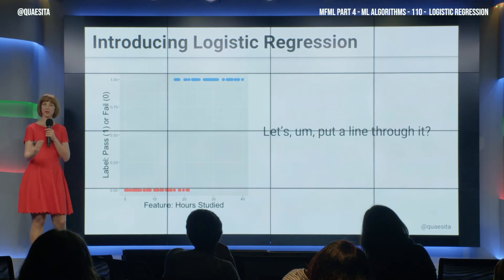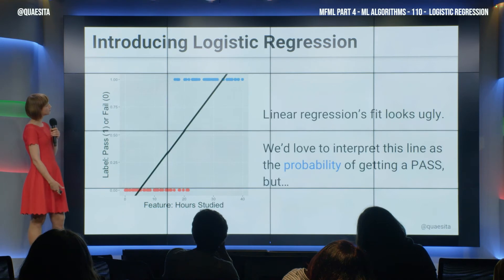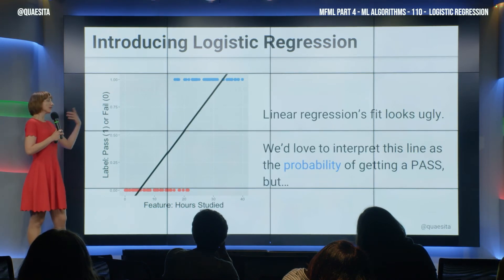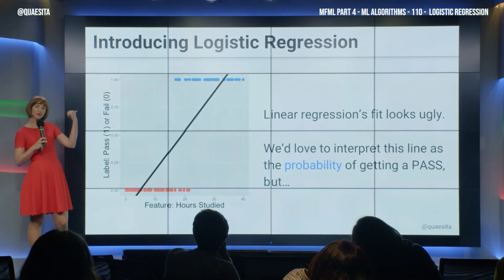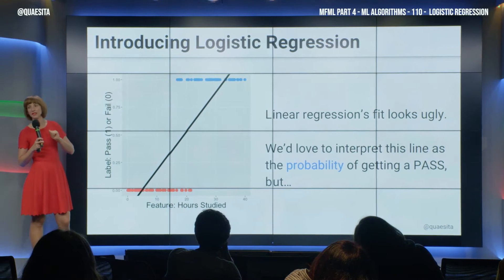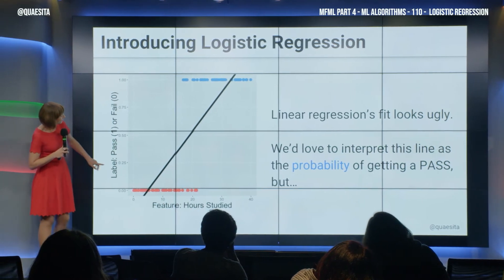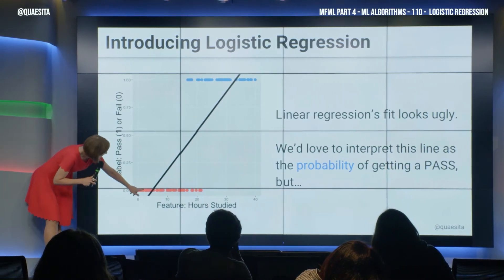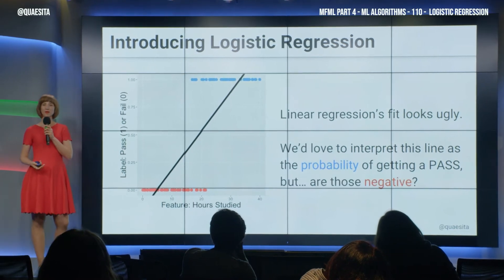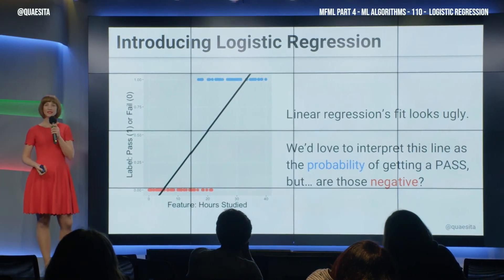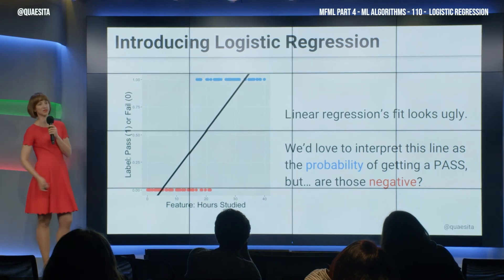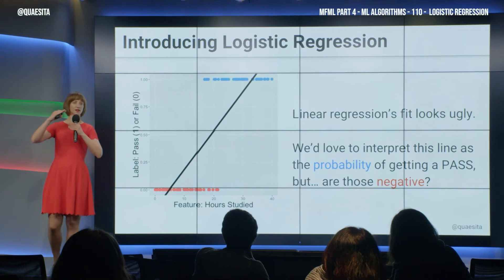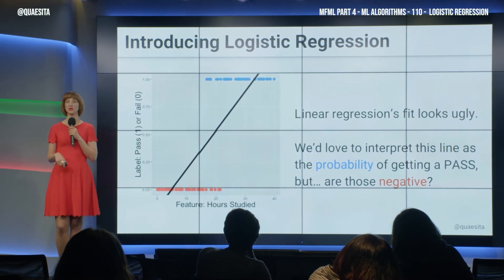We're in a 'putting lines through stuff' section, so let's put a line through it. We would love to interpret this as a probability — we've seen that it's nice to get probabilities as output. But if I study for two hours, I have a negative probability of passing? That doesn't make any sense. Probabilities can't be negative or more than 100%, so if I insist on a result between 0 and 100, I'd better try something else.